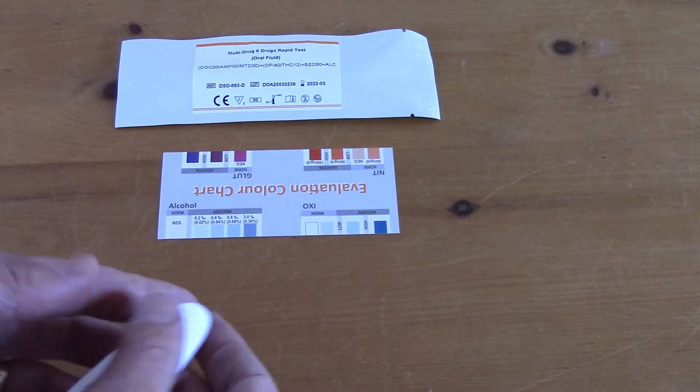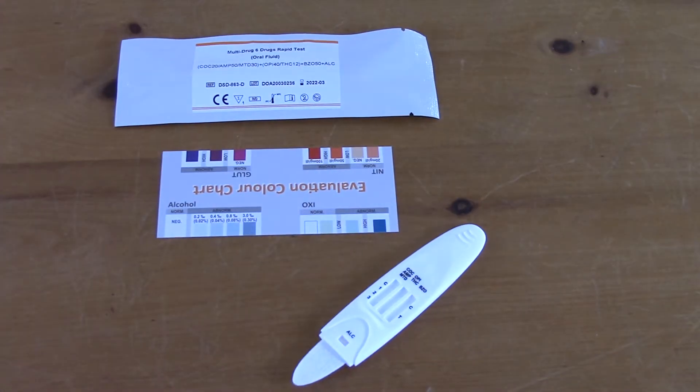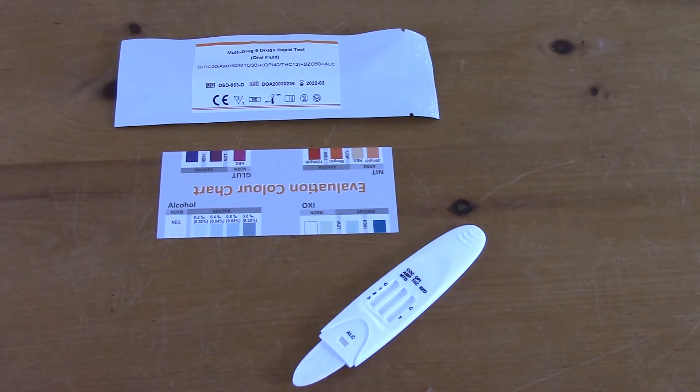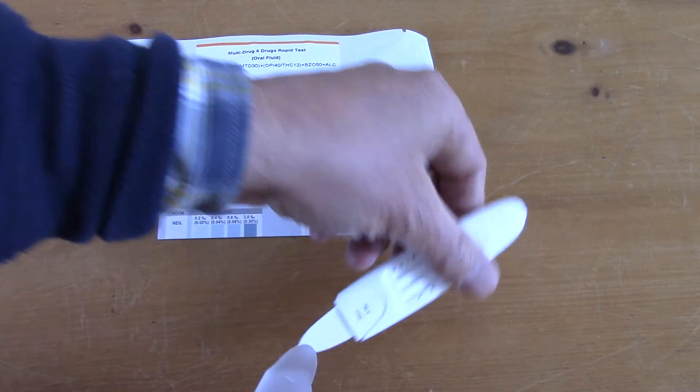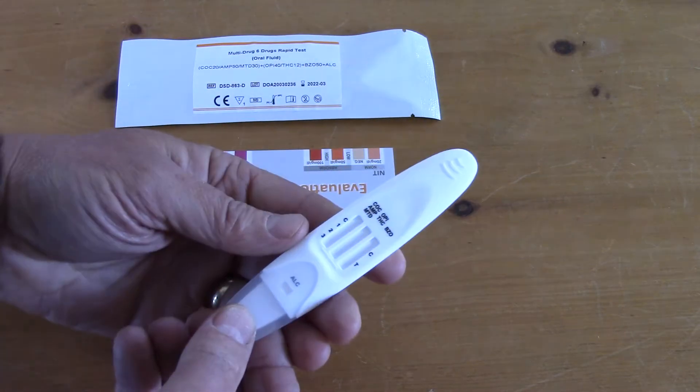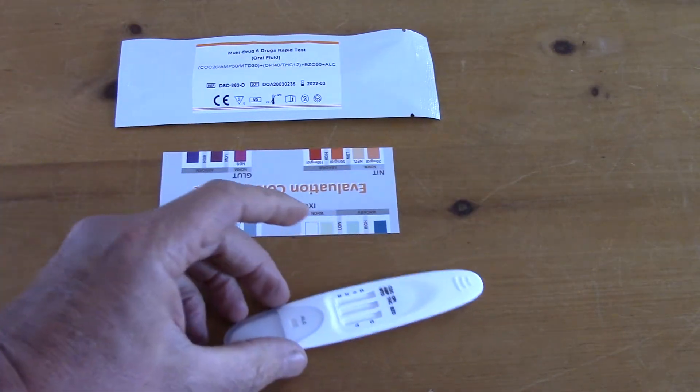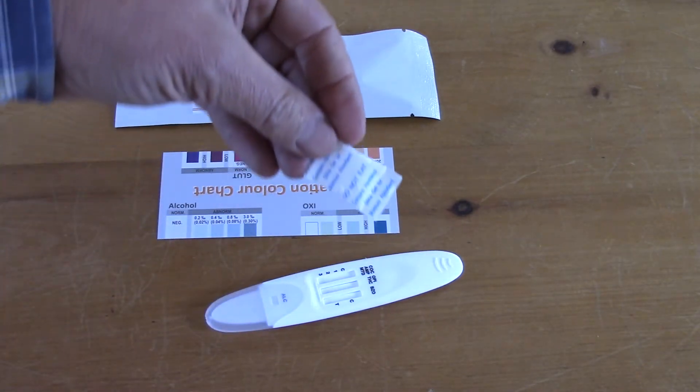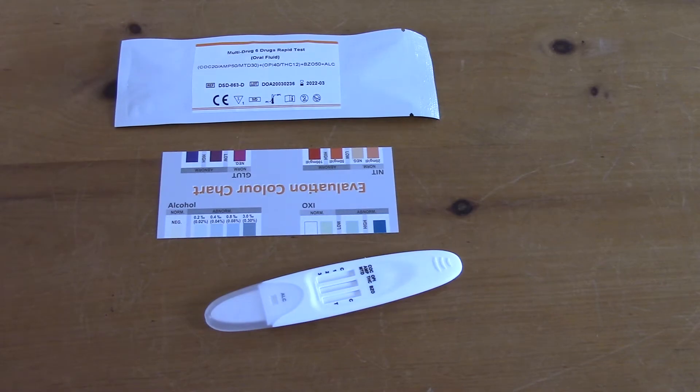So the procedure for testing. This would normally have a cover on which we've taken off. Let me just show you that—this is the protective cover. When it comes out of the foil you get that test cassette. You also find one of these which is the desiccant for keeping it dry.